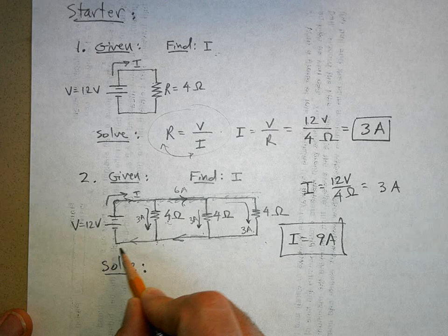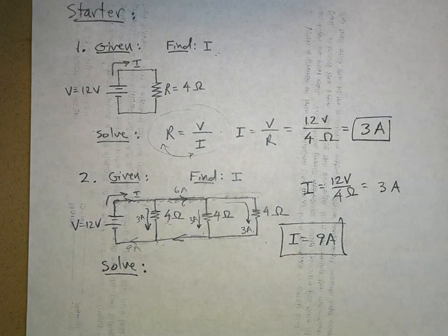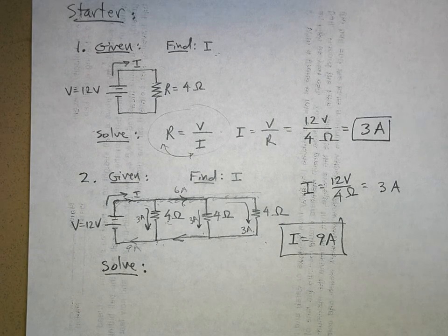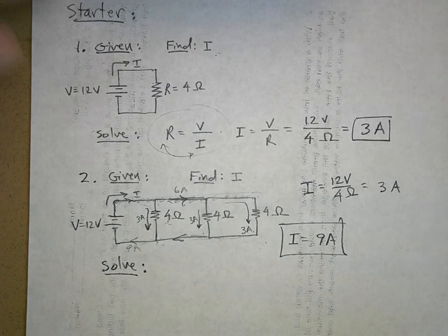Then this 3 amps comes in here, this 3 amps comes in here, so now I've got 6 amps flowing through here. Then this 3 adds to it, so I've got 9 amps going through here. Then all 9 amps go back into the battery, pick up the energy from the battery, and go back out into the circuit. Does this make sense to everybody? Any questions? Okay, that is all.